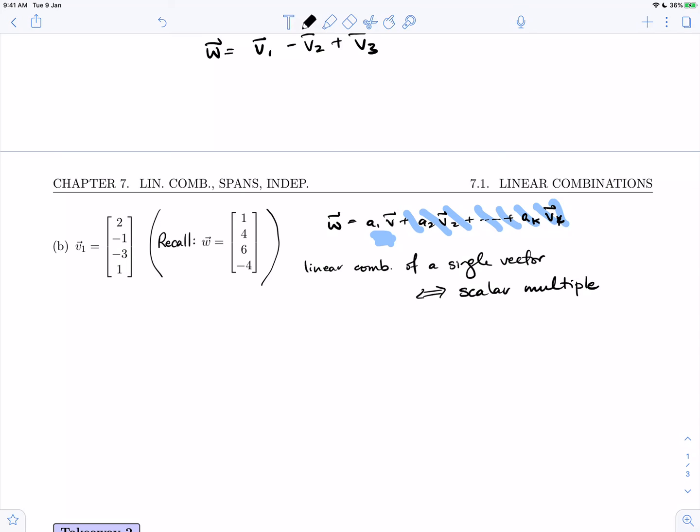So I'm being asked, is w a scalar multiple of v1? You can probably see right away that it's not, but let's set up. Is w equal to a times v1? In exactly the same way as the previous example, I can set up a linear system. Is 1, 4, 6, minus 4 equal to a times v1, which is 2, minus 1, minus 3, 1?